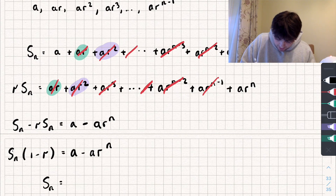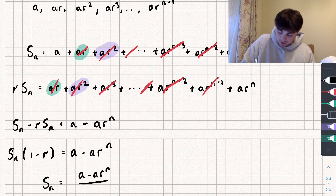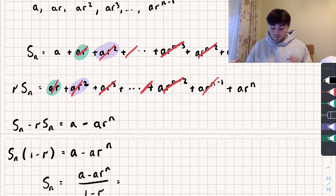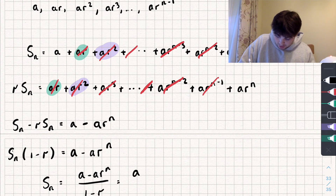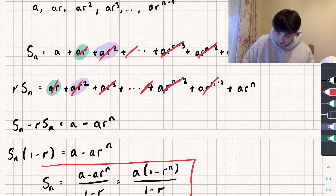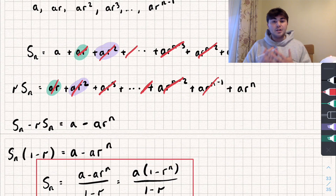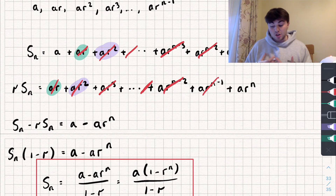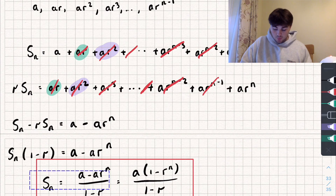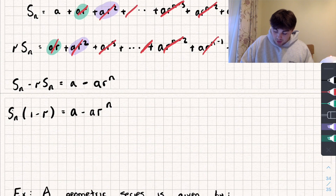Dividing both sides by 1 minus R gives us S_n equals A minus AR to the power of n, all divided by 1 minus R. If you want, you can factorise out A from the numerator to get S_n equals A multiplied by (1 minus R to the power of n) divided by (1 minus R). This is the formula for the sum of the first n terms of a geometric progression. It's given in the formula book, but it's useful to see where it comes from.